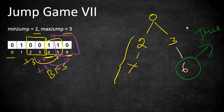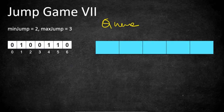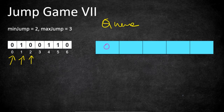If we cannot reach the last position after completing the full iteration, we return false. To implement BFS we need a queue to store the positions we can jump to. We start iterating the string from index 0, add it to the queue, then move to index 1 which is a 1 - ignore it. Move to index 2 which is a 0, so we can potentially jump to this position.